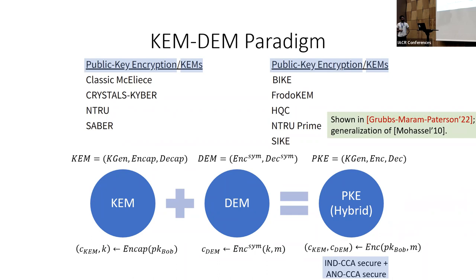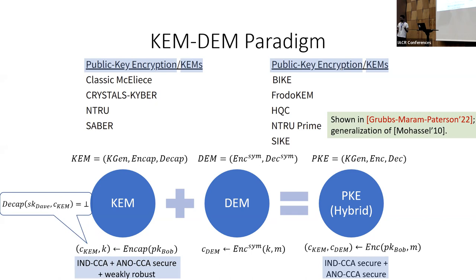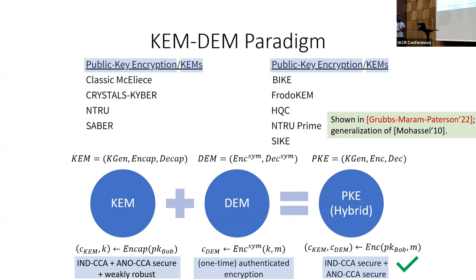One of our main results was to show what additional properties we require of our KEM to ensure the final PKE scheme satisfies anonymity. We showed that if our KEM is IND-CCA secure as before, but also satisfies a notion of anonymity — where the encapsulation under Bob's public key should be indistinguishable from encapsulation under a different public key — and if the KEM also satisfies a notion of weak robustness (i.e., if you encapsulate under Bob's public key but decapsulate using a different secret key you get back an error), then if the DEM is a standard authenticated encryption scheme, the final PKE scheme does satisfy anonymity.